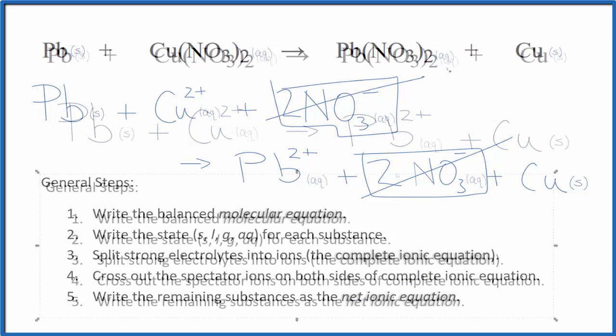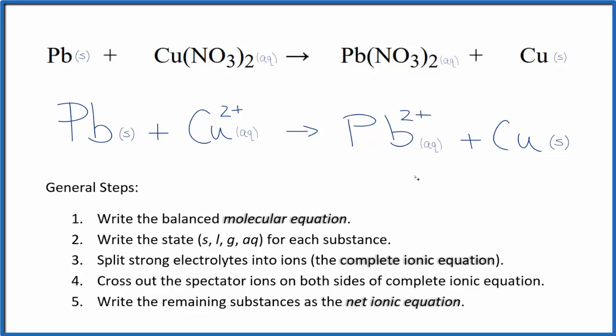Let's remove the spectator ions, and this is our balanced net ionic equation. You can see that the atoms are balanced, and that charge is balanced. We have this two plus here in the reactants, and in the products we have a two plus.